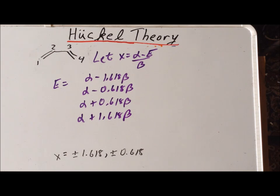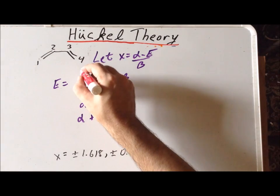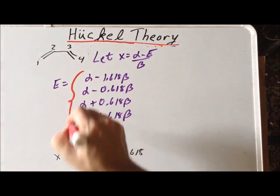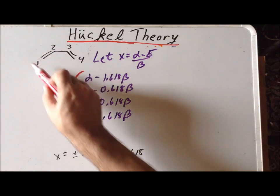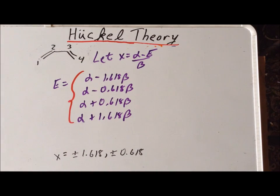So, we're able to derive the energy levels for the molecular orbitals formed by the linear combination of atomic orbitals on the carbon atoms in the pi system for butadiene. Thank you very much for your attention. Have a good one.